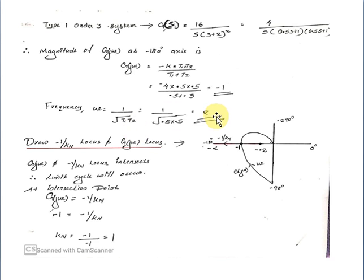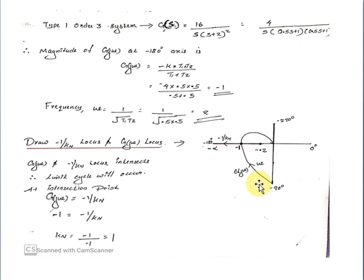Next, draw the minus 1 by KN locus and the G(jω) locus. The minus 1 by KN locus is from minus infinity to minus 0.2. The G(jω) locus intersects at minus 1. So the G(jω) locus and the minus 1 by KN locus intersect. Therefore, at the intersection point, a limit cycle will occur.